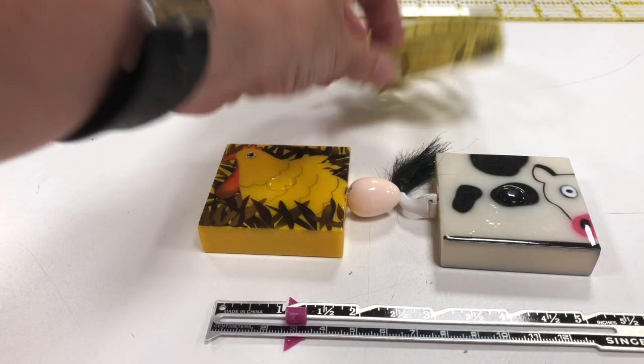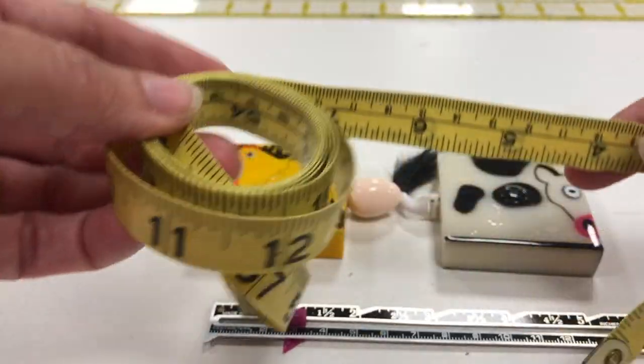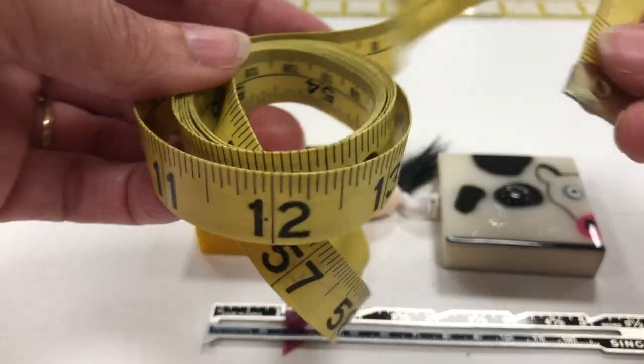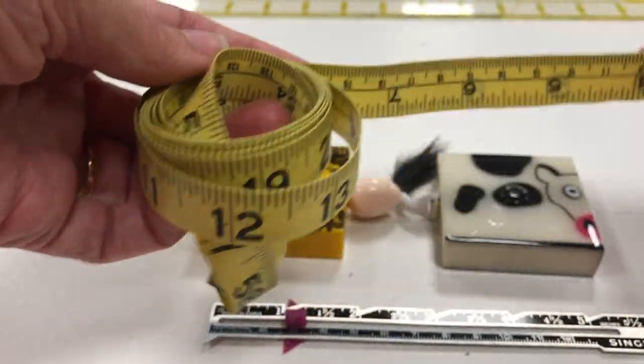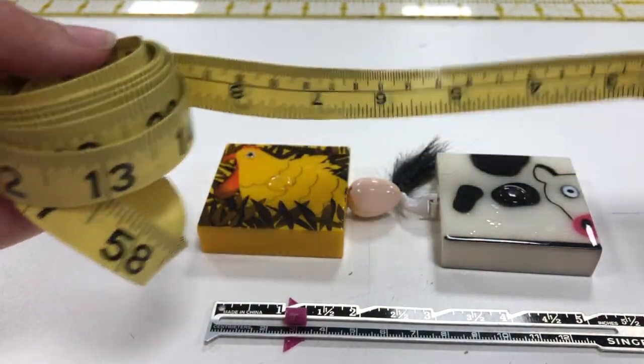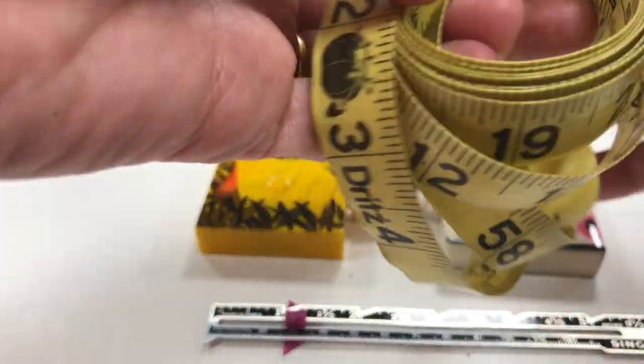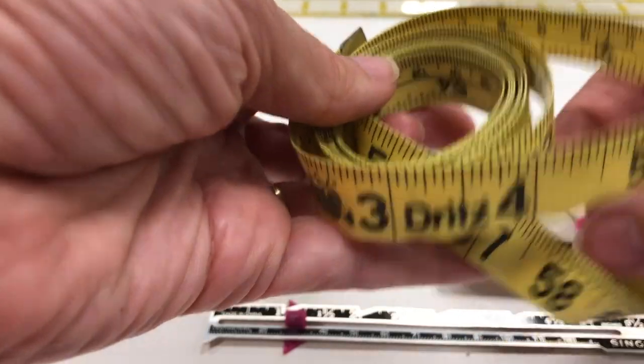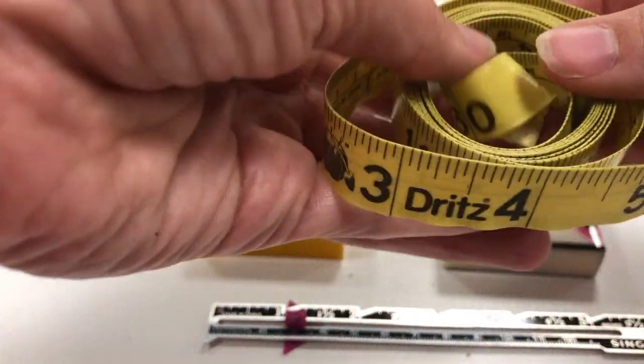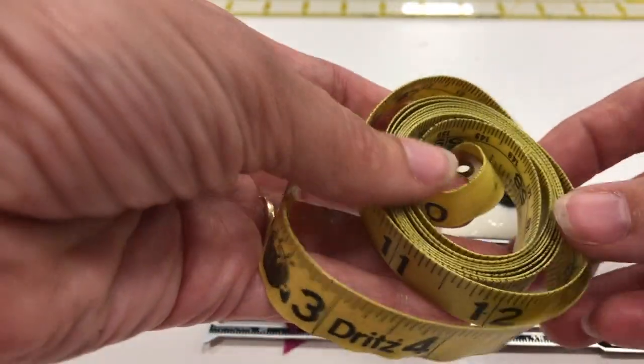The next one I want to talk about is the measuring tape. Notice how the measuring tape is very soft and it is pliable. It makes it really easy to do body measurements so the main thing that we do with the measuring tape is we take body measurements because it can wrap around your body very easily.